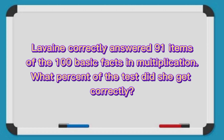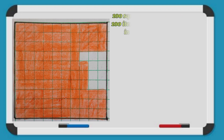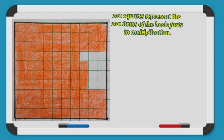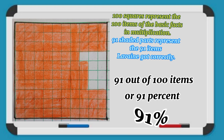To start with, I have here a problem. Let us read: Levine correctly answered 91 items of the 100 basic facts in multiplication. What percent of the test did she get correctly? Take a look at this illustration. There are 100 squares representing the 100 items. There are 91 shaded parts representing the 91 items Levine got correctly. Therefore, 91 out of 100 items, or 91% of the test, Levine got correctly.